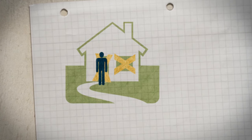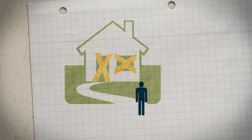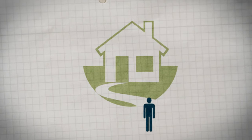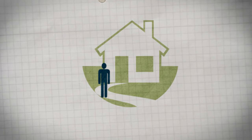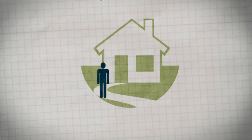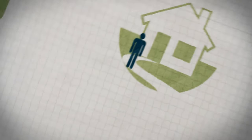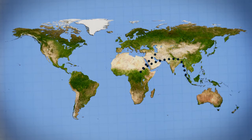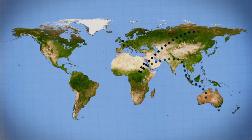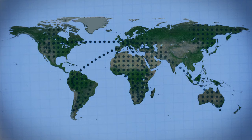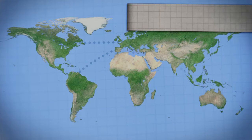Migration is defined as the permanent change of residence of a person or group. It is a natural, social phenomenon. Humans have colonized the entire world and penetrated its remotest areas. Migration has taken place within very different contexts.